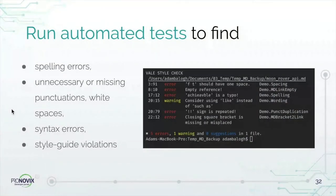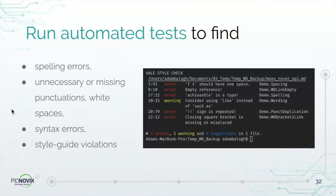Let me show you some things you can test in your documentation. You can run automated tests to find spelling errors, unnecessary or missing punctuations, white spaces, syntax errors, broken links, missing or unused images, and style guide violations. And if you use a linter frequently, it makes it possible to detect errors and violations during writing.